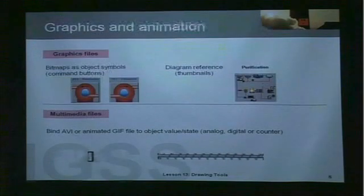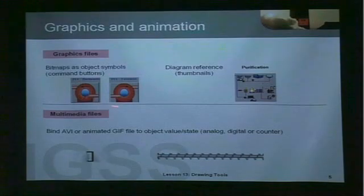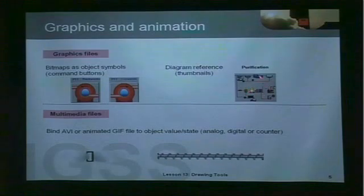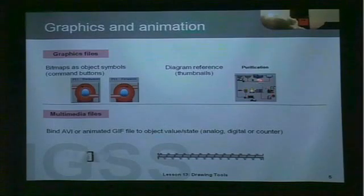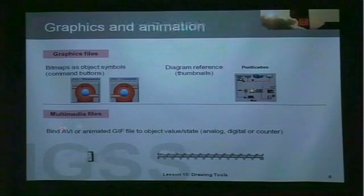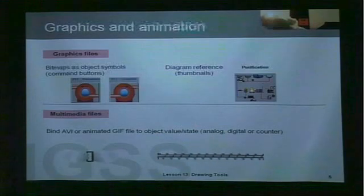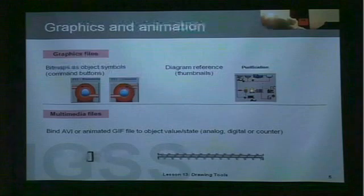Then we have the fun section: graphics, files, and animation. Graphics can be used for different states of a digital object — we see two different graphics here for two different states or commands for a digital object. You can use graphics for diagram references or thumbnails, so you can have a mini mimic diagram on your overview diagram linking to the actual sub-diagram. You can also bind AV files or animated GIF files to the value or state of an IGSS object, so when the motor runs, the animation will also run.